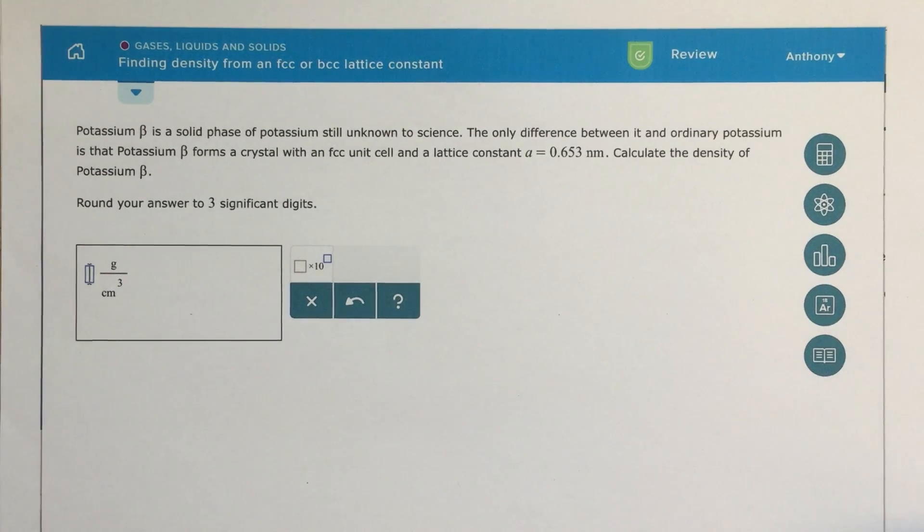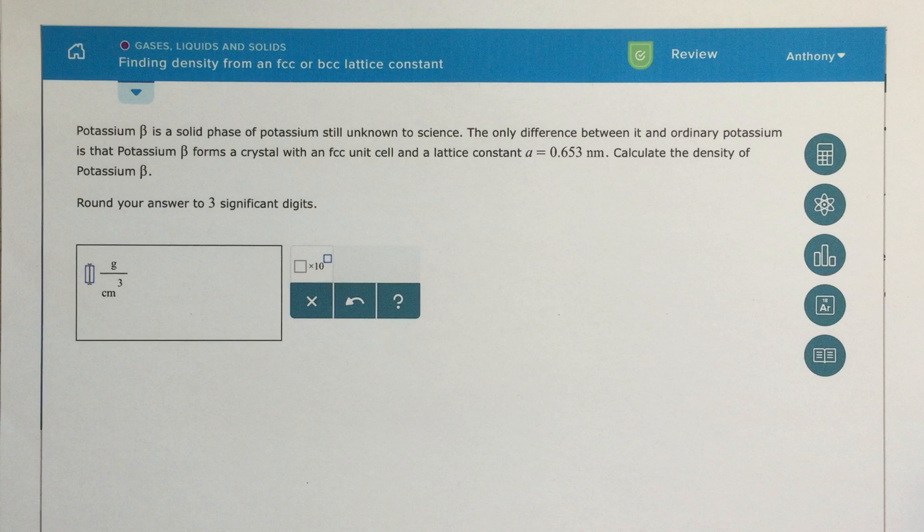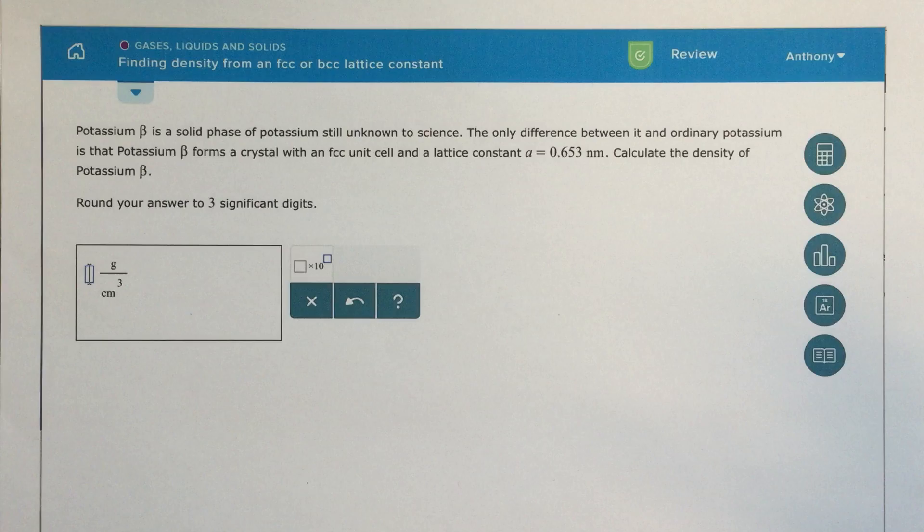Alright class, so this is an Alex topic. It's called finding density from an FCC or BCC lattice constant. FCC means face-centered cubic and BCC means body-centered cubic. These are pictures that we're going to have to have in our minds to draw a little diagram to describe what that looks like, and that will help us solve this problem.